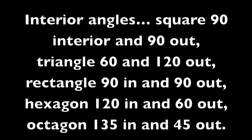Interior angles: Square 90 in and out. Triangle 60 in and 120 out. Rectangle 90 in and 90 out. Pentagon 108 in. For the bottom two, 90 in and 90 out. Top three, 70 in and 90 out.